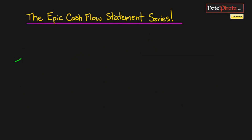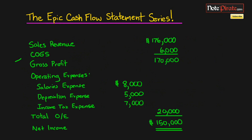Let's get rid of the balance sheet and open up our income statement. We have three different types of expenses: salaries expense, depreciation, and income tax expense. First, we need to decide whether each is a cash or non-cash expense, because that's going to decide whether we're going to add it back in or not.